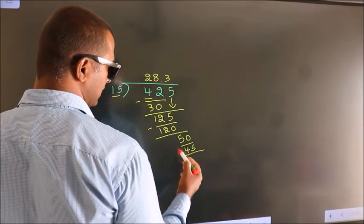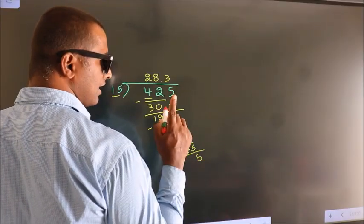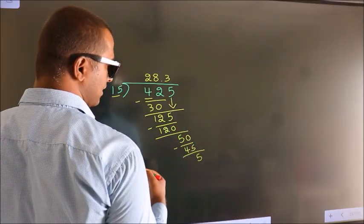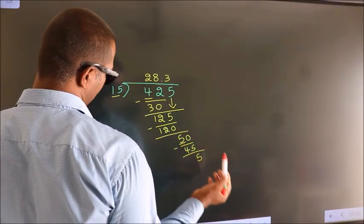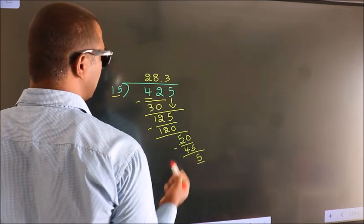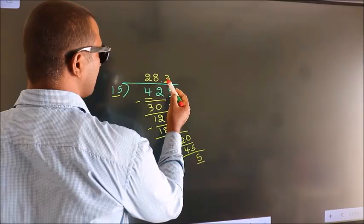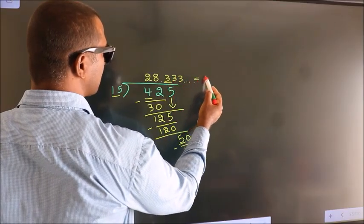Now we subtract. We get 5. Now you observe, here we had 5 and we got 5 again. That means this number keeps on repeating. So this is our quotient.